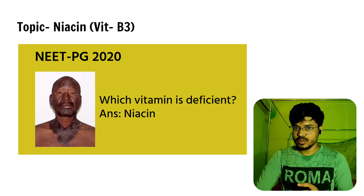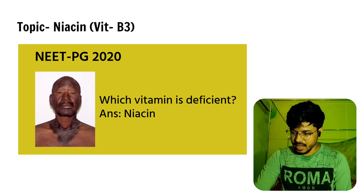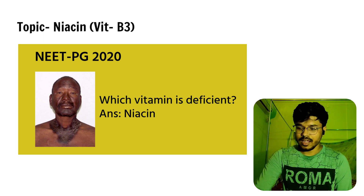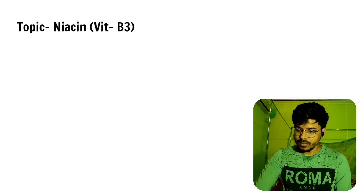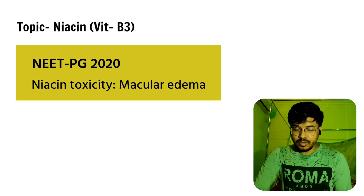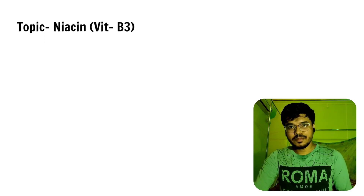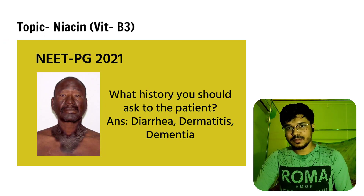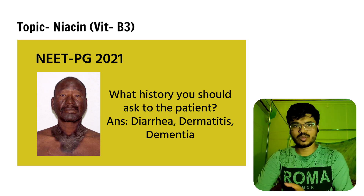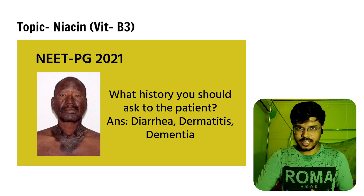In NEET-PG 2020, they again gave the image of Casal's necklace and asked which vitamin is deficient. The answer is Niacin. One more question in the same paper was about Niacin toxicity — the answer is macular edema. In NEET-PG 2021, they once again gave the image of Casal's necklace and asked what history you should take from the patient. The answer is history of diarrhea, dementia, and dermatitis — the 3 Ds.